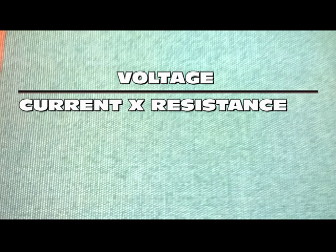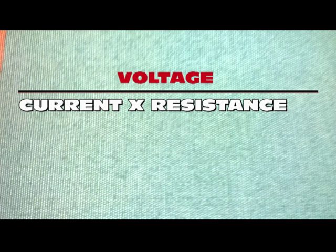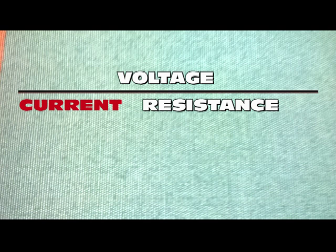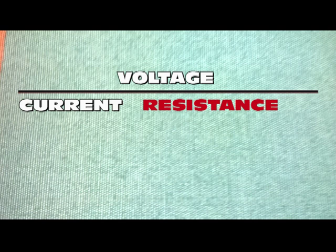To easily apply this formula, simply exclude the factor you want to know about and watch the arithmetic operation you must perform. For example, if we want to know the voltage, we put it in red and the formula will tell us that we must multiply the current by the resistance. If we want to know the current, we put it in red and the formula will indicate that we must divide the voltage by the resistance. And finally, if we are interested in finding the resistance, we will divide the voltage by the current.